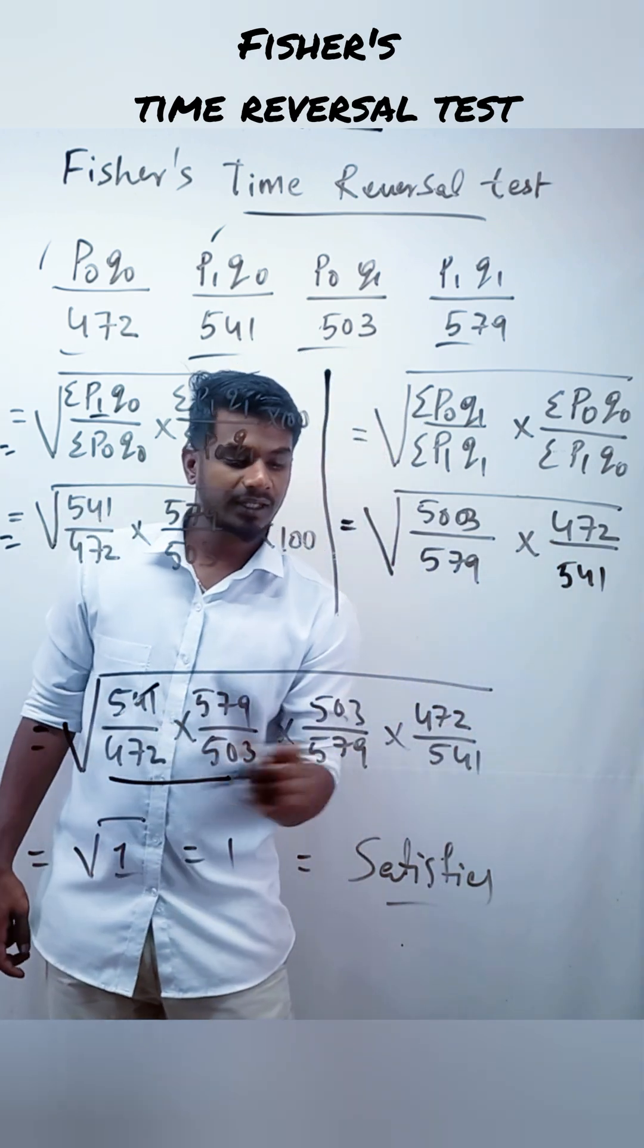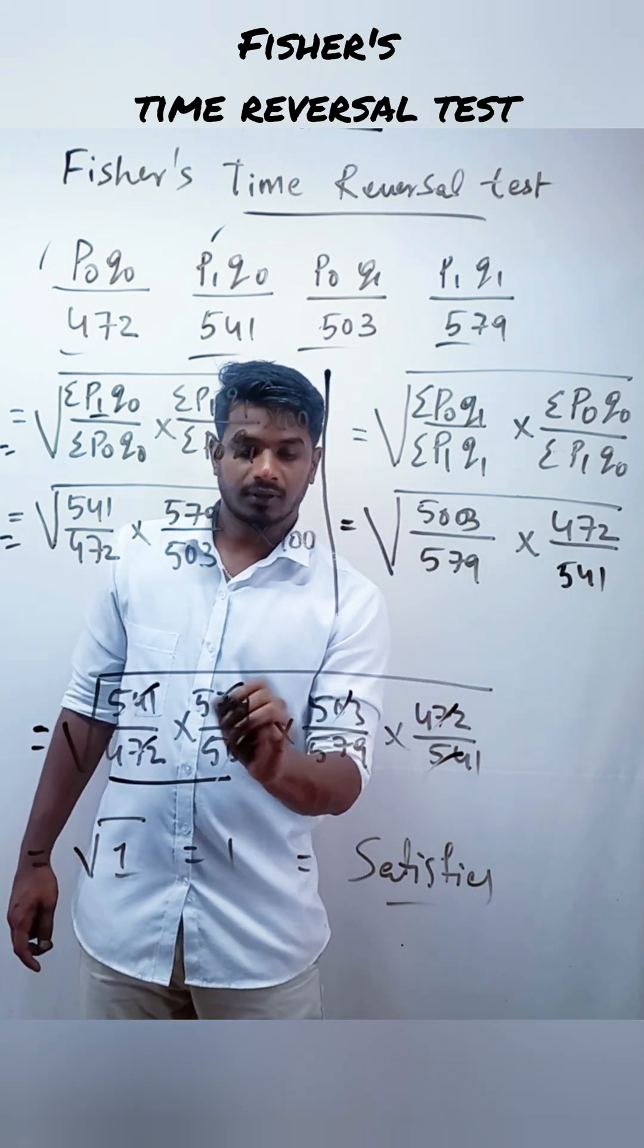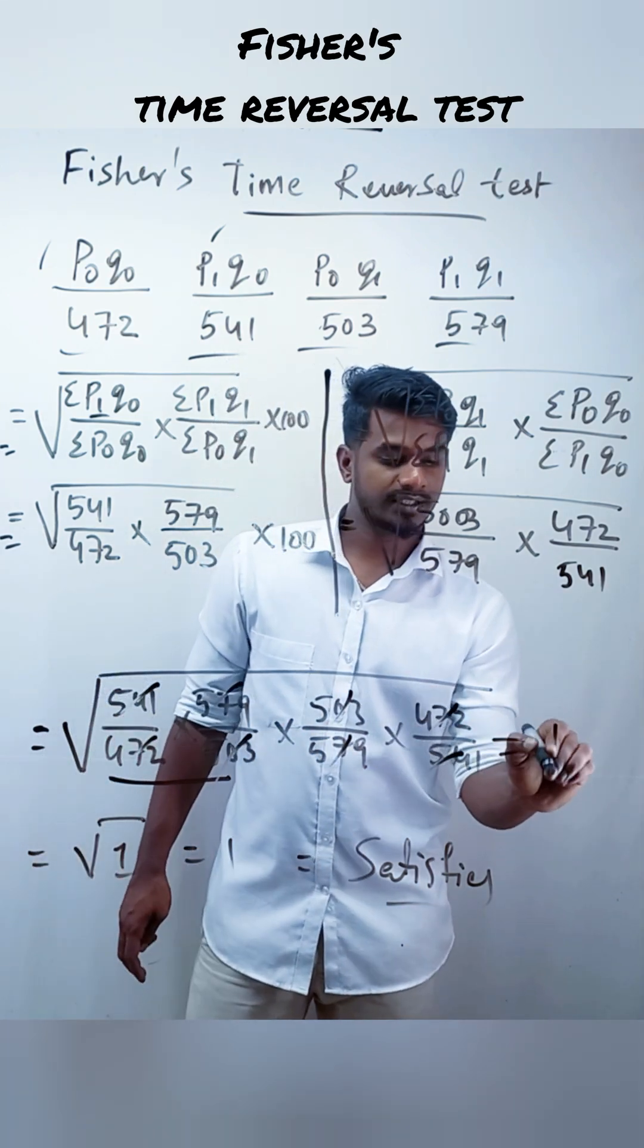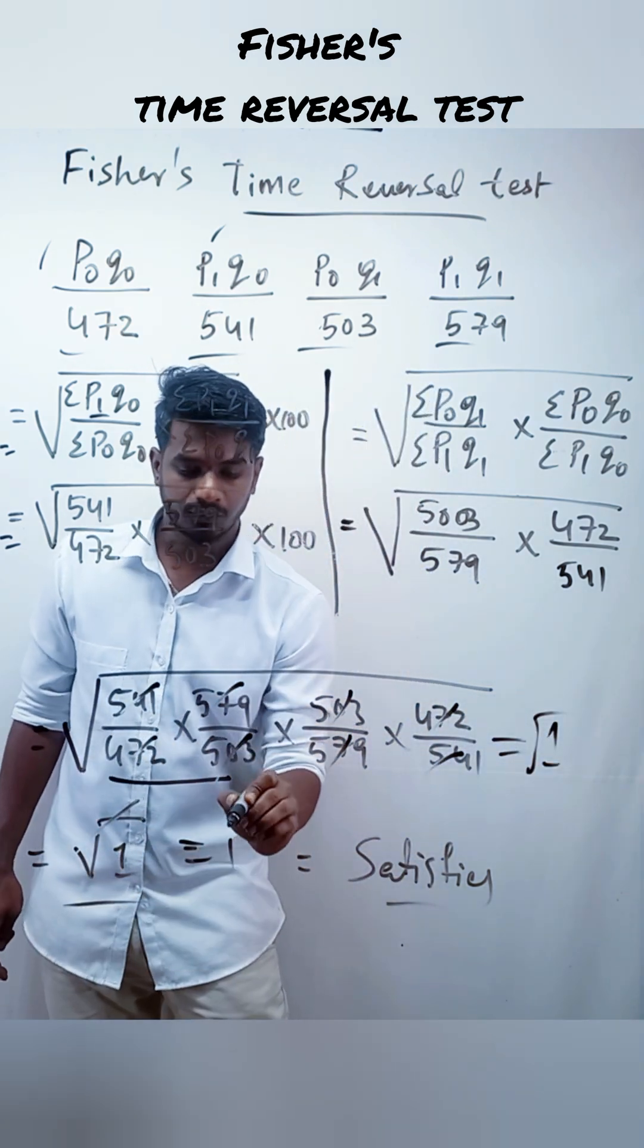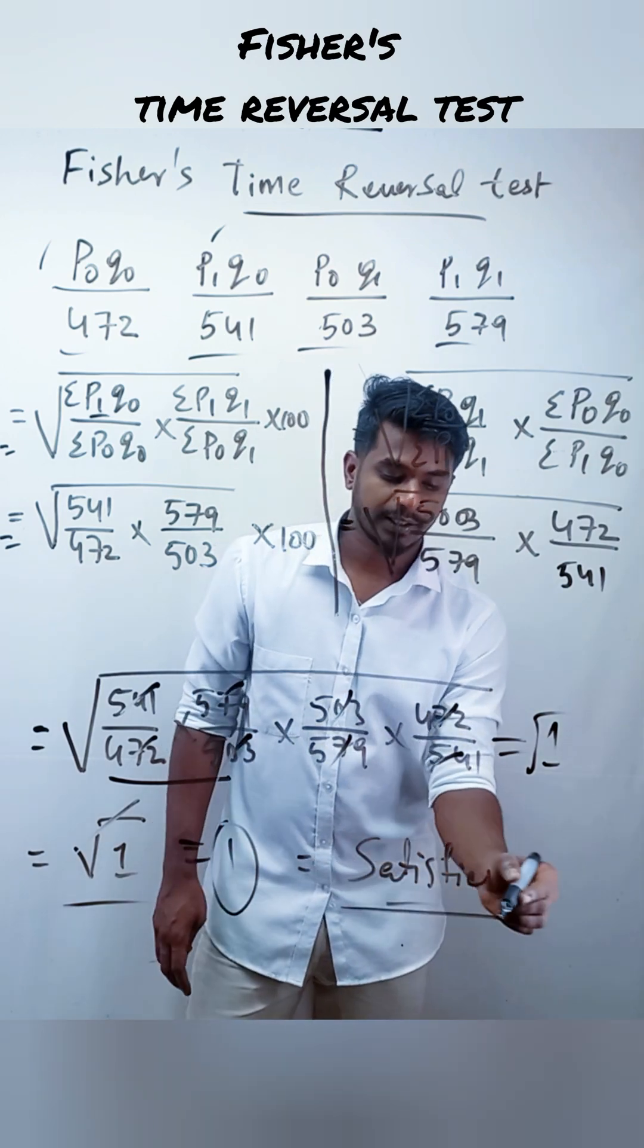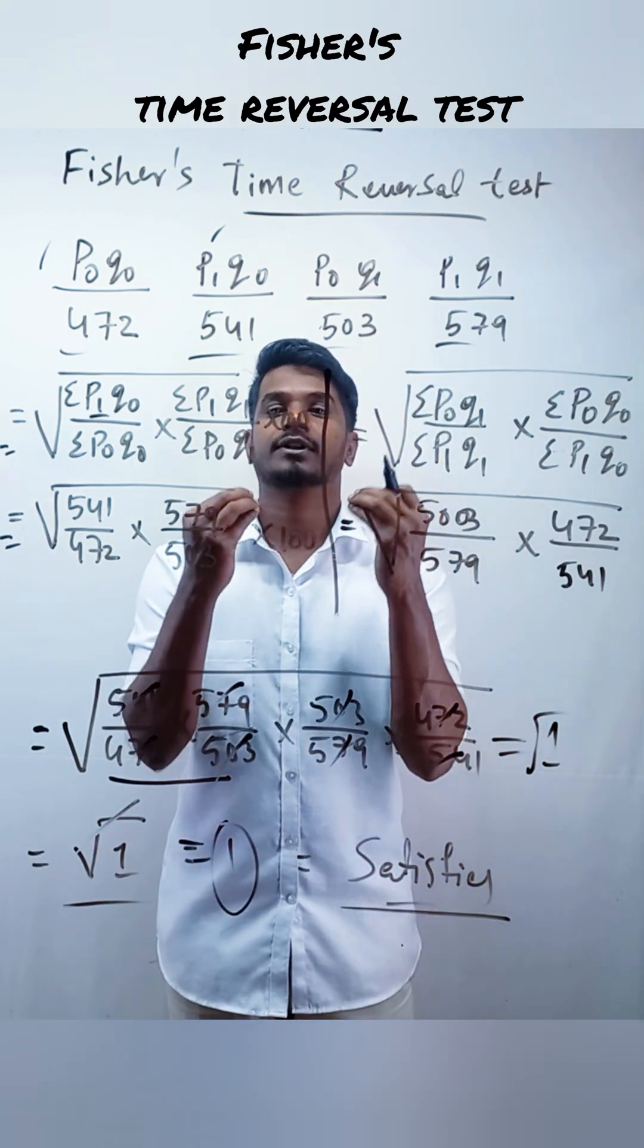Now, everything will be cancelled. This is equal to root 1 and if you remove the root, it will be equals 1. So, it is satisfying the TRT.